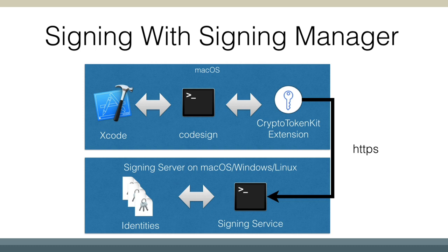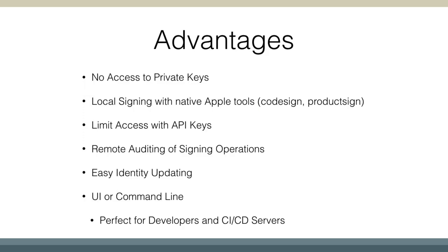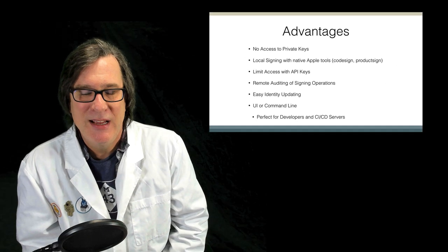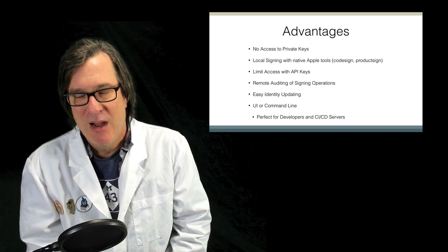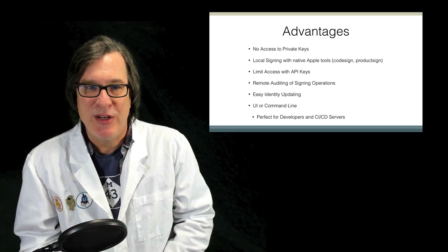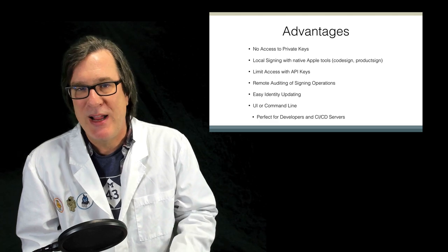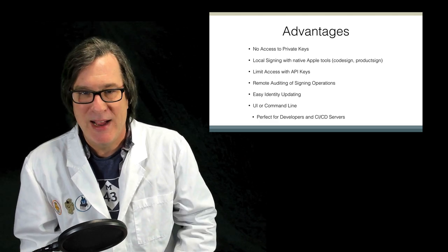The machine doing the build never has access to the private key, so you don't have to worry about those credentials going somewhere unknown. Signing is still performed through the native Apple tools — CodeSign or ProductSign — but you can limit who does signing by requiring an API key installed locally. Only machines with that API key can perform signing operations. Since all operations go through the remote service, we provide remote auditing so you know who signed what, with which API key and certificate, and at what time.